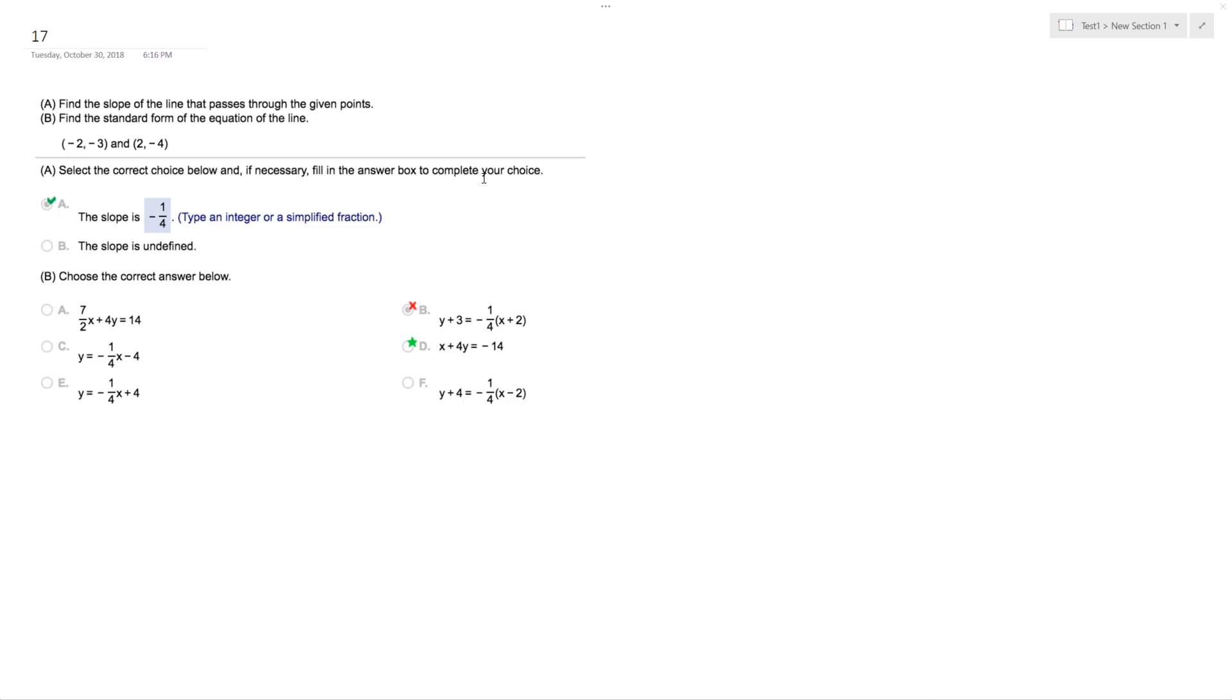So we want to find the slope of the line that passes through the two given points, and then we want to find the standard form of the equation of the line.